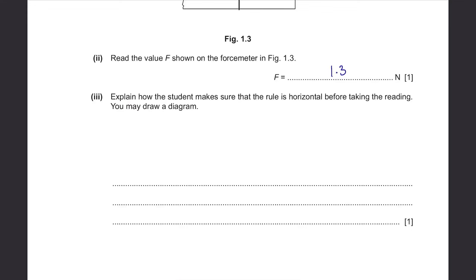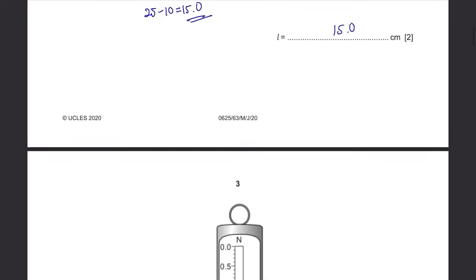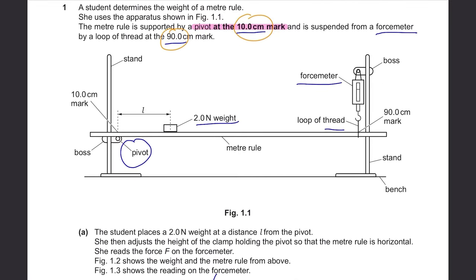Explain how the student makes sure that the rule is horizontal before taking the reading. While the ruler seems horizontal in the drawing, balancing a meter rule that is 1 meter long can be quite hard. To do that, you can make sure the distance between the bench and the ruler at both ends is the same — for example, 20cm on the left and 20cm on the right. Alternatively, you can use a set square between the rule and the stand; since a set square has a 90-degree angle, you can ensure they are perpendicular and the ruler is horizontal.